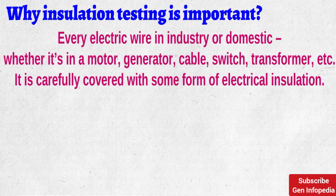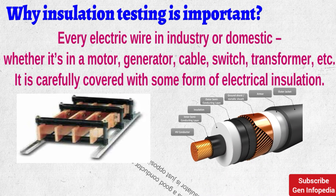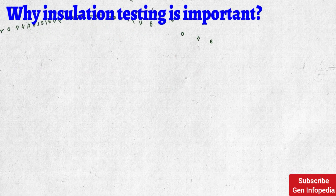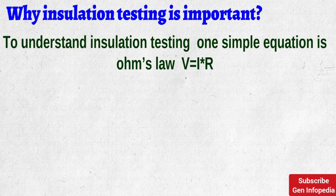Now we will see why insulation testing is so important in electrical equipment. Every electric wire or busbar in industry or domestic use — whether in a motor, generator, cable, switch, or transformer — is covered with some form of electrical insulation. This wire or busbar is usually copper or aluminum, which is a good conductor of electric current, but the insulator is the opposite. The insulator should resist current and keep the current in its path along the conductor.